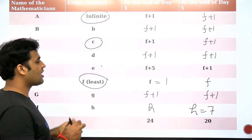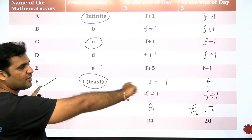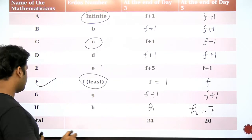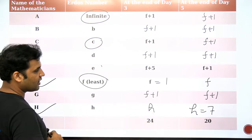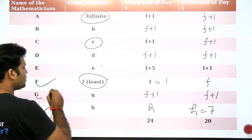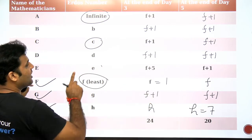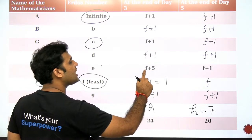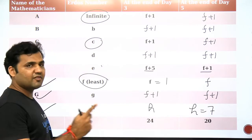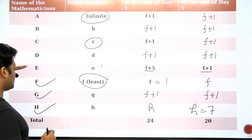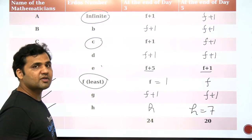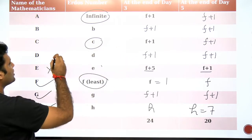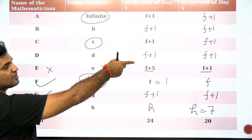F is the person jiska Erdos number as it is constant rahega, because uska Erdos number sabse chhota hai. H ka koi bhi co-authorship nahi hai, so H ka Erdos number bhi as it is same rahega. G ne koi co-authorship nahi kiya, toh G ka Erdos number bhi same rahega. E ne fifth day pe co-authorship kiya tha, jiski wajah se uska Erdos number F+5 se F+1 pe change hua — so E ka Erdos number change ho raha hai. D ka koi co-authorship nahi hua, toh D ka Erdos number change nahi hua.